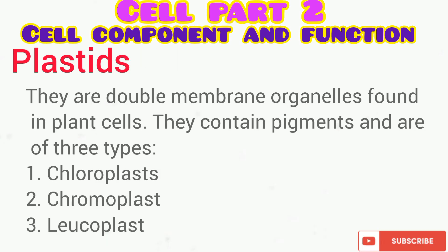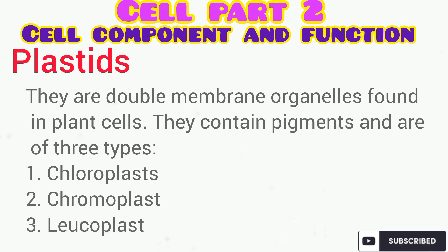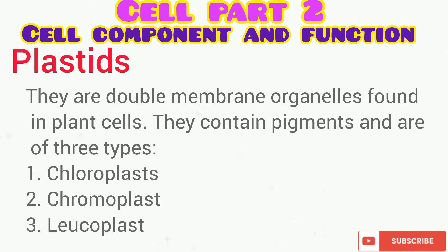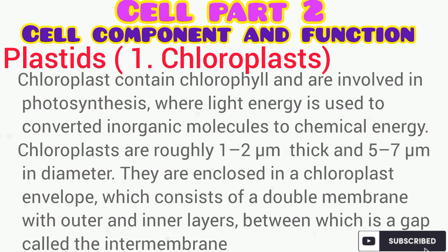Another component of the cell is the plastids, which are double membrane organelles found in plant cells. They contain pigments and are of three types: chloroplasts, chromoplasts, and leucoplasts.